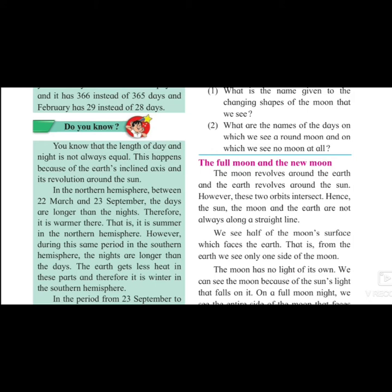However, during this same period in the southern hemisphere, the nights are longer than the days. If the northern hemisphere has longer days and shorter nights, then in the southern hemisphere the days will be shorter and nights will be longer. After 23rd September, in the southern hemisphere the days will be longer and nights shorter, while in the northern hemisphere the days will be shorter and nights longer — so the southern hemisphere will have summer and we will have winter.